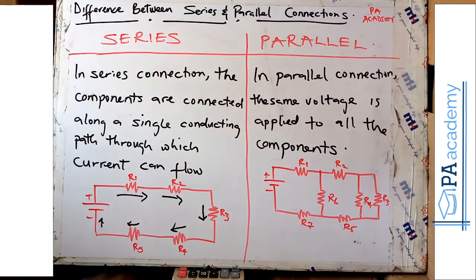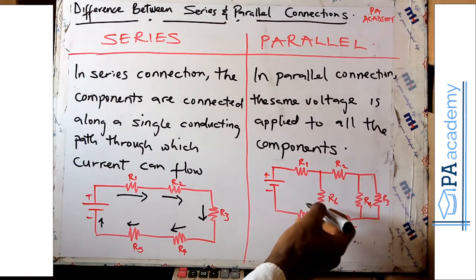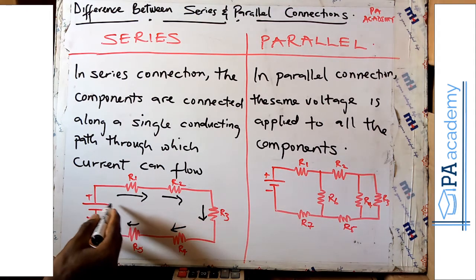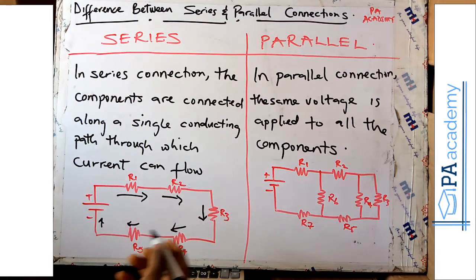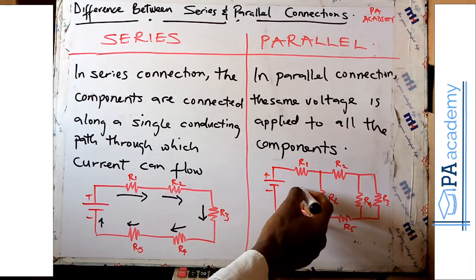Now let's look at the parallel connection. In a parallel connection, the same voltage is applied to all the components. So all the components in a parallel circuit share the same voltage. Unlike the series connection where we have current passing through a single conducting path, in parallel we have multiple paths.